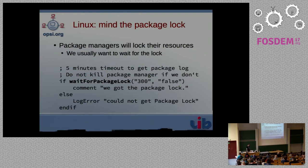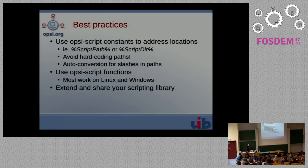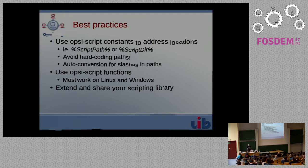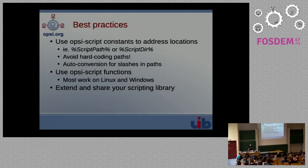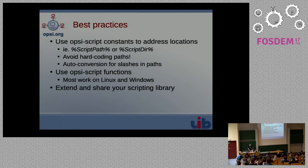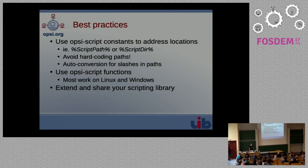Now I want to give you some best practices we usually apply when writing scripts that should run on different platforms. First: use Opsi script constants like the script path to avoid hardcoding paths. Put paths into variables and change them accordingly. Even if you think you're just writing for Linux now, there may be a day when you need to run it on Windows and you'll have to change all your scripts. To make things easier, Opsi script does auto-conversion of slashes in paths so you don't have to worry about forward slash versus backward slash — Opsi handles it for you. The one downside is you can't put slashes in file names.